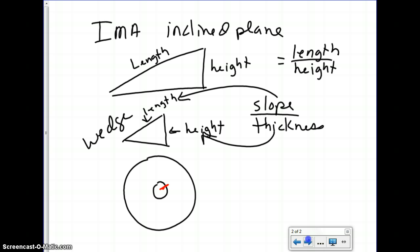We're going to look at the radius of each one. This is the radius of the axle. This is the radius of the wheel. The IMA here is radius of the wheel divided by the radius of the axle. So actually calculating mechanical advantage on those is quite simple.